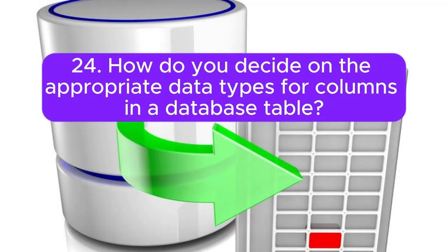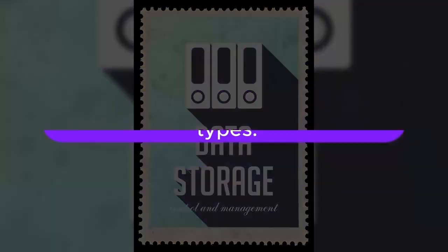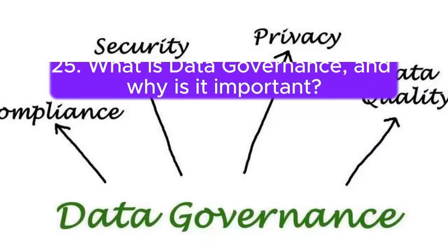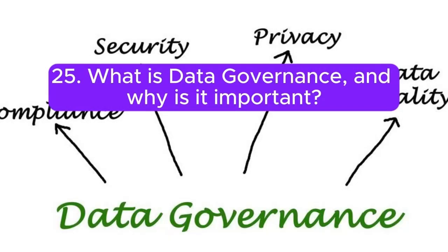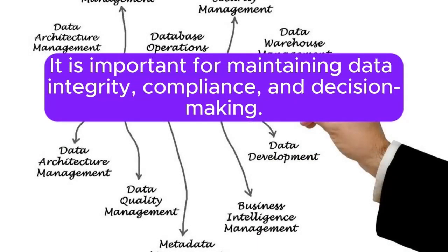24. How do you decide on the appropriate data types for columns in a database table? Answer: Consider factors like the nature of the data, storage requirements, and the expected range of values when choosing data types. Use numeric types for numeric data, date types for dates, and so on. 25. What is data governance, and why is it important? Answer: Data governance is the practice of managing and ensuring the quality, availability, and security of data throughout its life cycle. It is important for maintaining data integrity, compliance, and decision making.